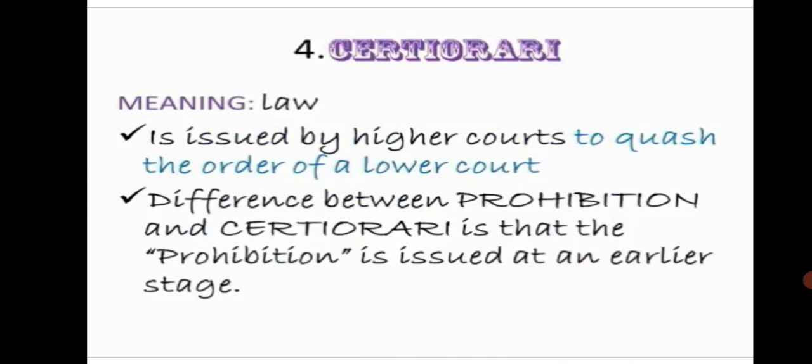The fourth writ is certiorari. It is issued by higher courts to quash the order of a lower court. The difference between prohibition and certiorari is that prohibition is issued at an earlier stage, whereas certiorari is issued at a later stage.